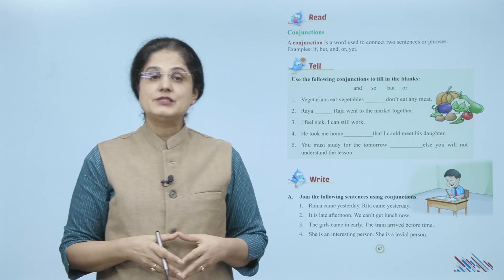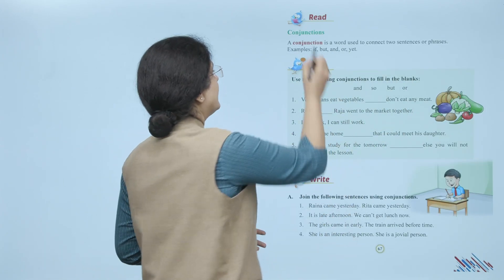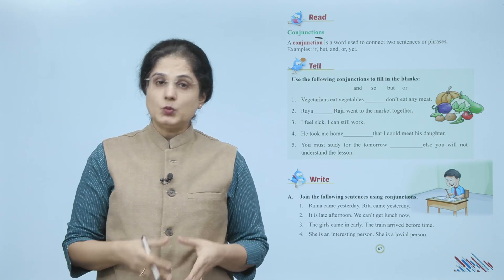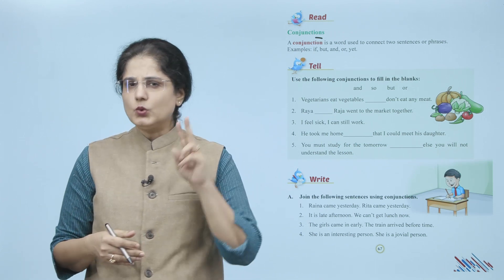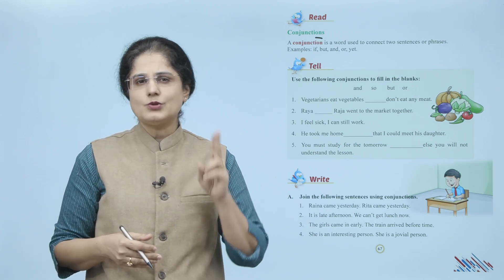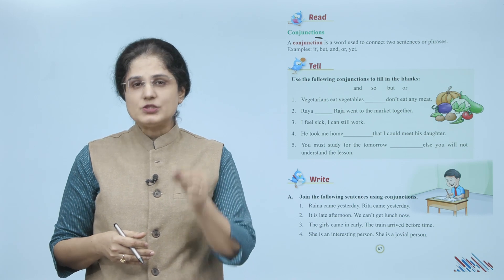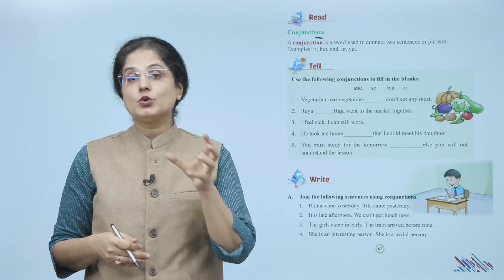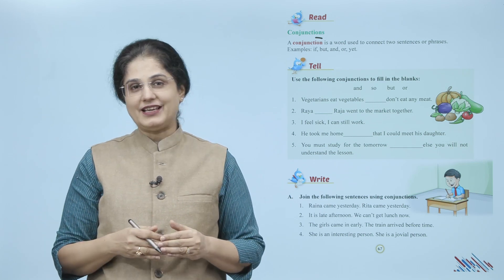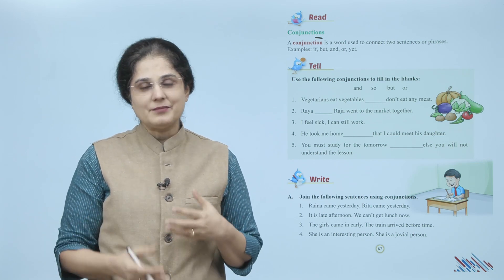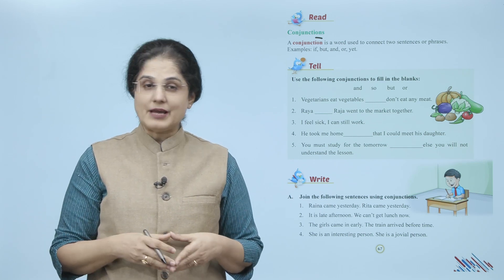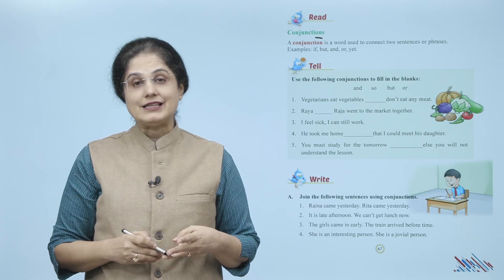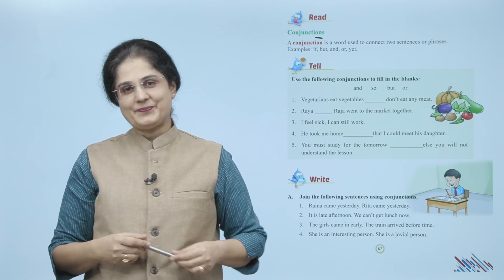Now let us read what are conjunctions. A conjunction is a word used to connect two sentences or phrases. Examples include: if, but, and, or, yet.